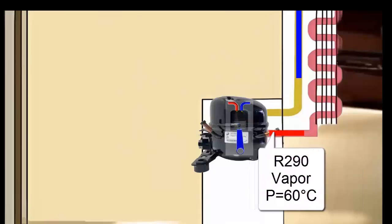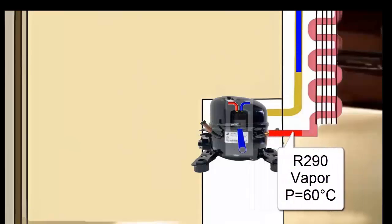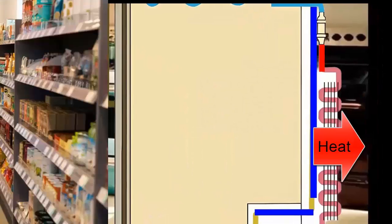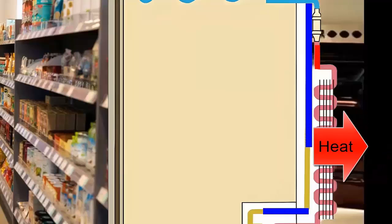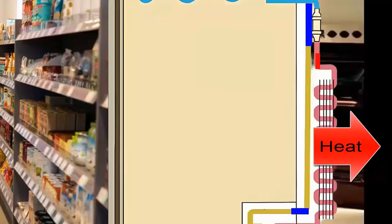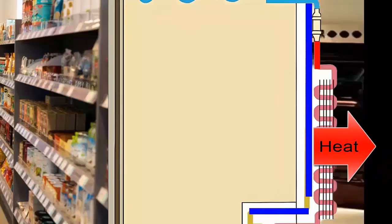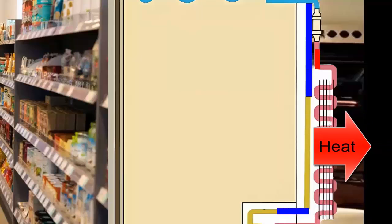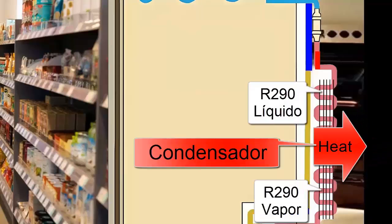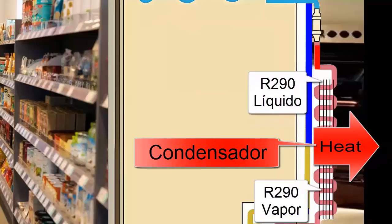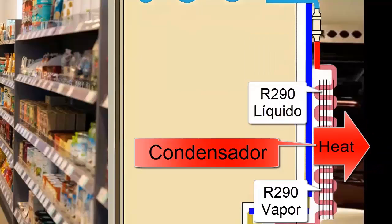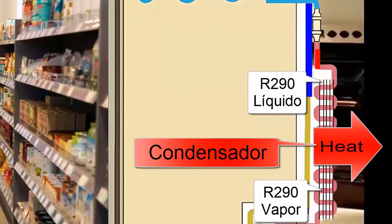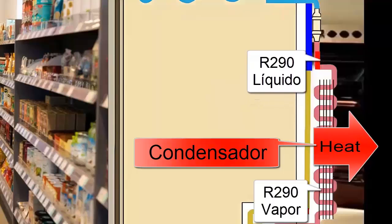In the condenser, the refrigerant must release the heat absorbed from the products inside the equipment and the energy absorbed in the compressor. This heat must be expelled into the environment. This heat dissipation process is favored by the high pressure that the R290 refrigerant gained in the compressor.